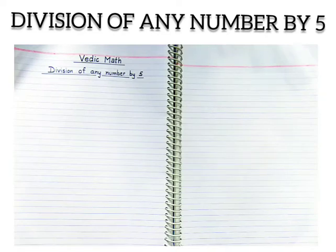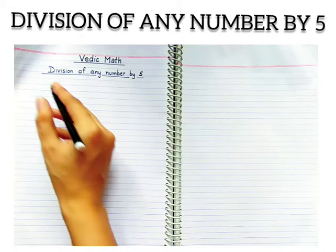Let's take any number. Suppose question number one: 28 divided by 5. Now the trick goes like this.